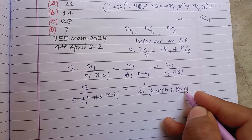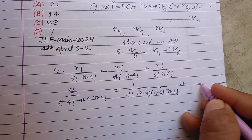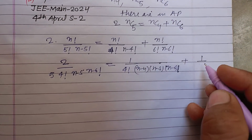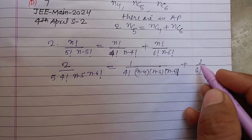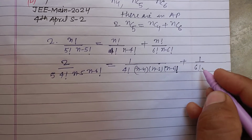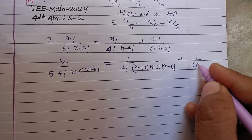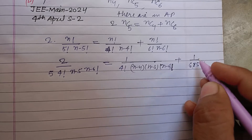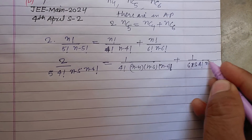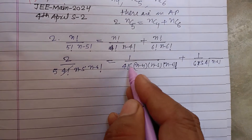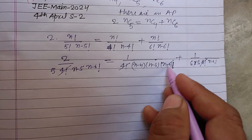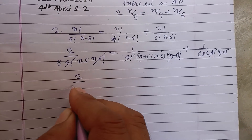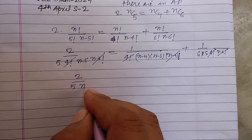We have (n−6)! terms, and 1 divided by 6! equals 1 divided by 6·5·4!. So 4! cancels on both sides, and (n−6)! cancels. We get 2 divided by 5·(n−5) on the left side.